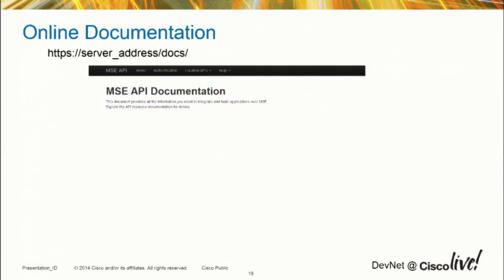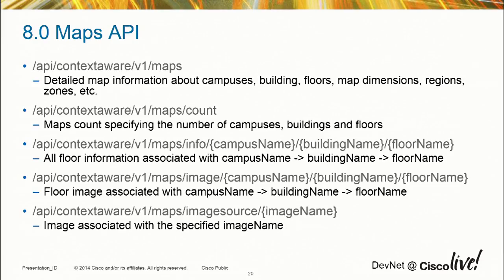Once you have your MSC, if you go to slash doc slash, you get all our REST API documentation. You can then look at the documentation for each API. For maps, for example, doing a maps query will download all map information: building dimensions, zones, AP locations, and so forth. I can get a count of the various information — how many floors I have, things like that.